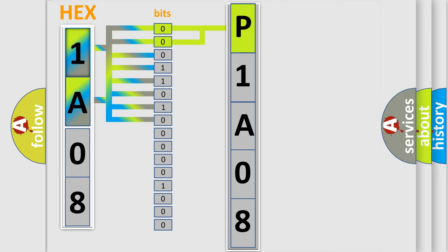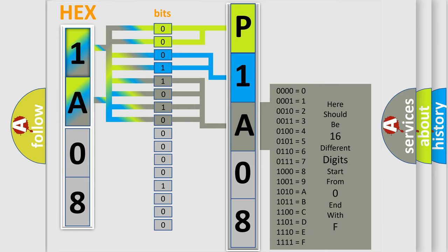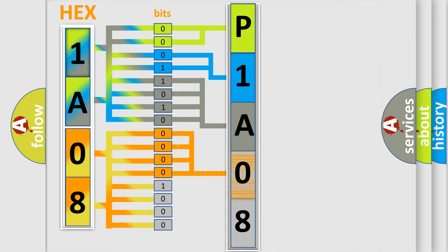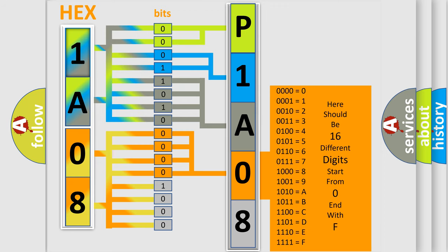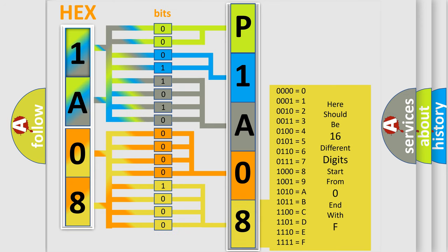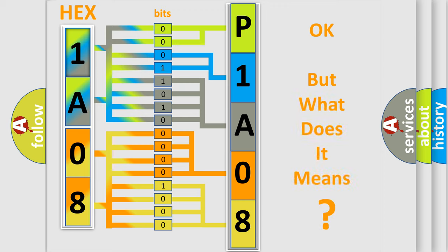The next two bits determine the second character. The last bits of the first byte define the third character of the code. The second byte is composed of a combination of eight bits. The first four bits determine the fourth character of the code, and the combination of the last four bits defines the fifth character. A single byte conceals 256 possible combinations. We now know how the diagnostic tool translates received information into a more comprehensible format.